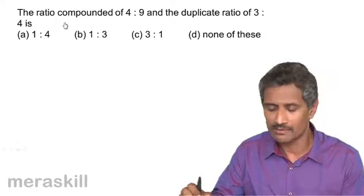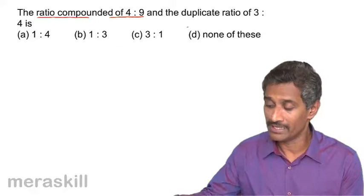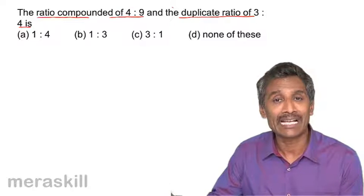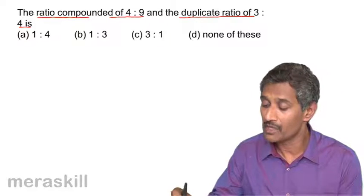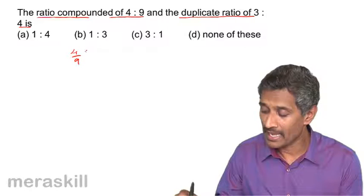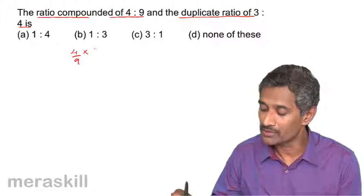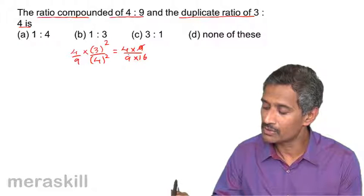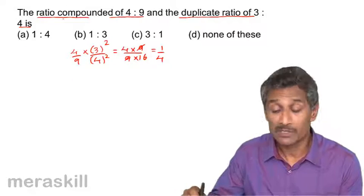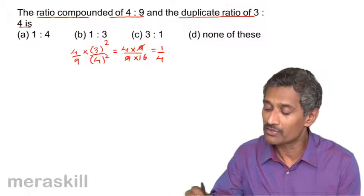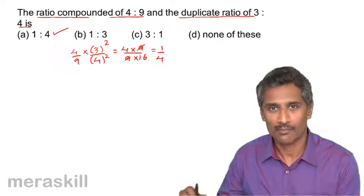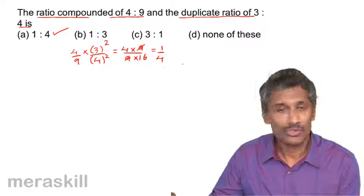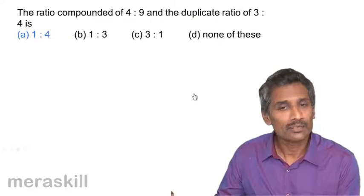Now here we have the ratio compounded of 4/9 and the duplicate of 3/4. The duplicate ratio means the square ratio, that is 3²/4² = 9/16. So the compound ratio is (4/9) × (9/16), which turns out to be 1/4. The ratio compounded of 4:9 and the duplicate ratio of 3:4 is 1 is to 4.